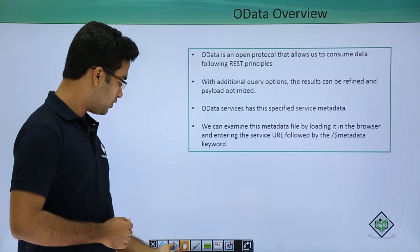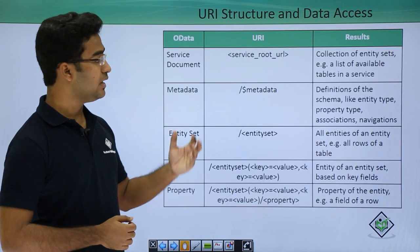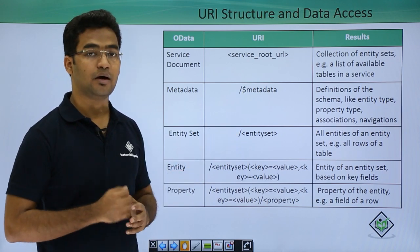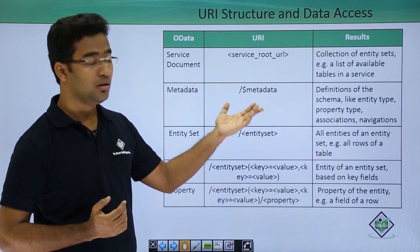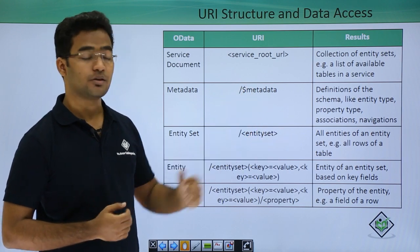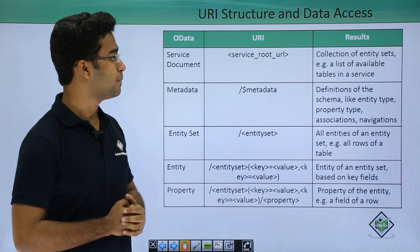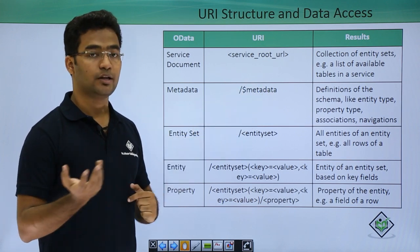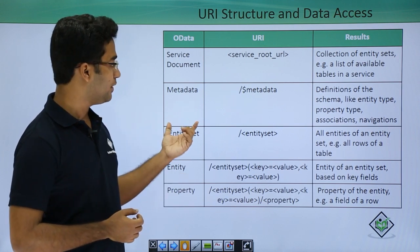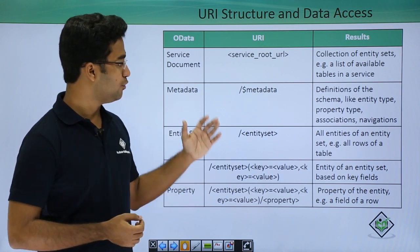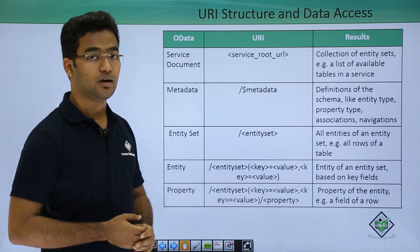Moving on to the next slide, we can see the URL structure and how to access the data. Basically we have a URL through which we could access our OData service, which contains entity sets, navigations, associations, and all — accessible using the service URL. When talking about tables, we get all entries using the entity set, and we have the metadata accessible via dollar metadata after the root service URL.